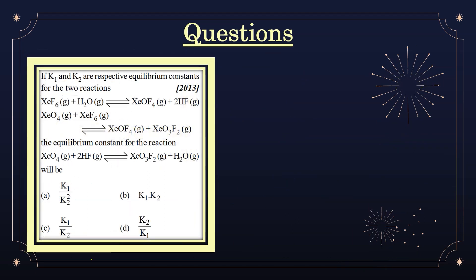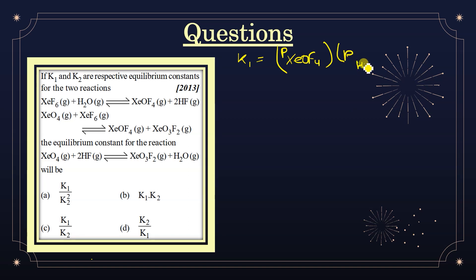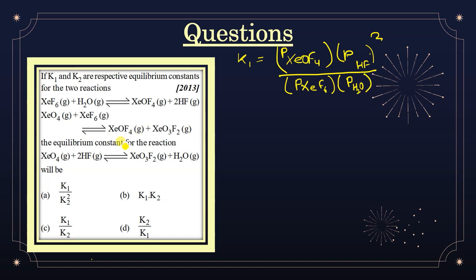Next question: K1 and K2 are equilibrium constants for two reactions involving XeF6. Since these are gaseous reactions, we use Kp notation. Write Kp expressions — K1 = P(XeOF4)·P(HF)^2 / (P(XeF6)·P(H2O)) for the first reaction.